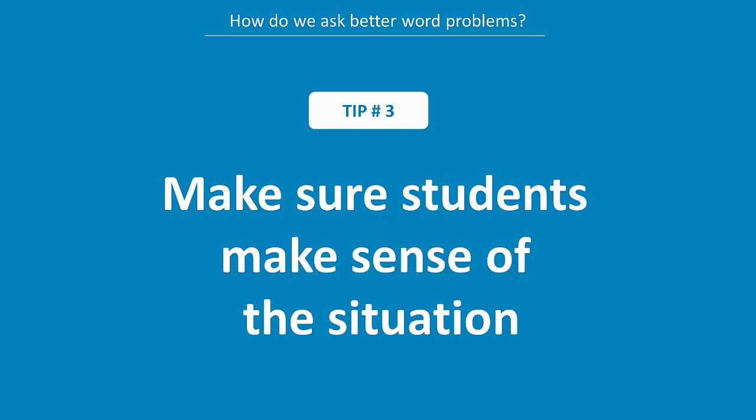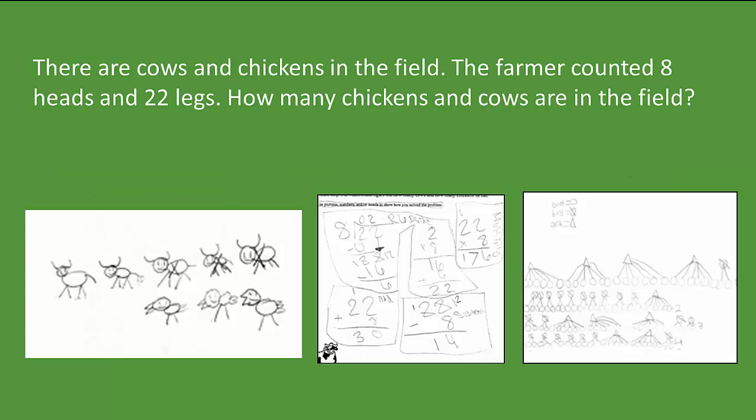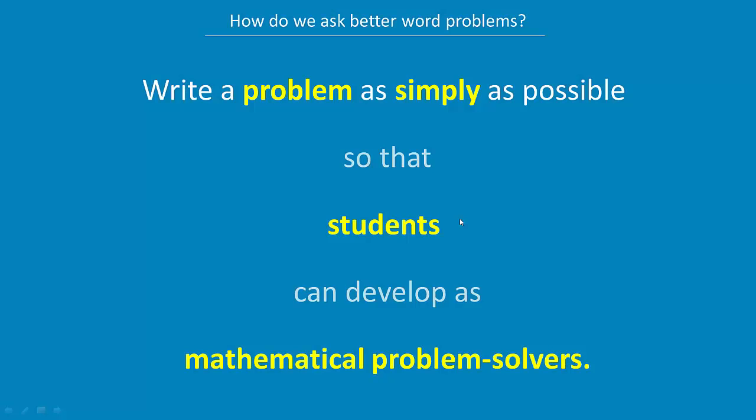Our third and final tip: we want the situation to come alive so that students can think for themselves and model with mathematics. Make sure students can make sense of the situation. Here's an example: there are cows and chickens in a field. The farmer counted eight heads and 22 legs. How many chickens and how many cows are in the field? What's great about this problem is that students have the freedom to develop strategies for themselves — it's not a plug-and-chug question. Students can't simply add, subtract, or plug into a known formula. You have to develop your own strategy, rely on quantitative and deductive reasoning, and truly problem solve.